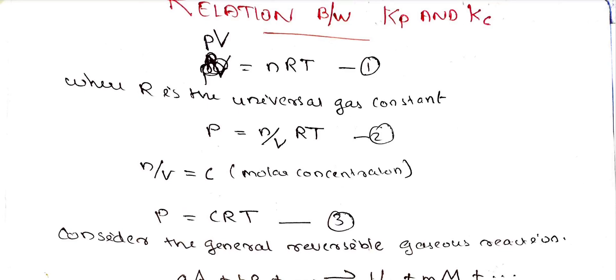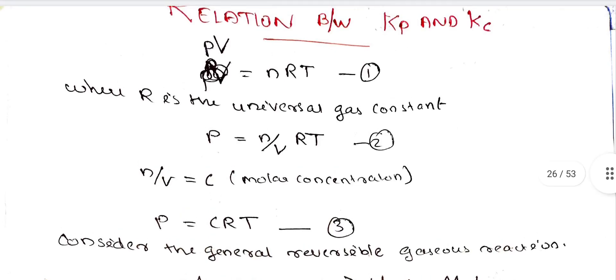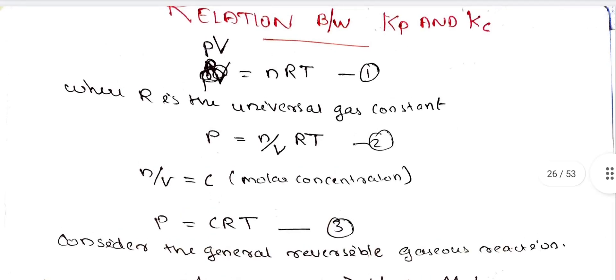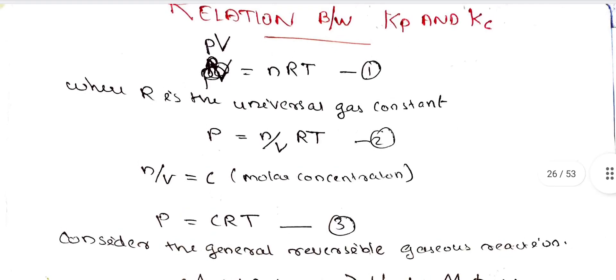We have the ideal gas equation: PV is equal to nRT. R is the universal gas constant. P is the pressure, V is the volume, T is the temperature, and n is the number of moles.